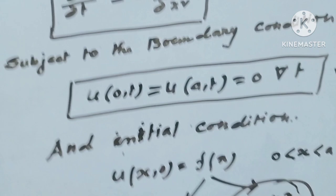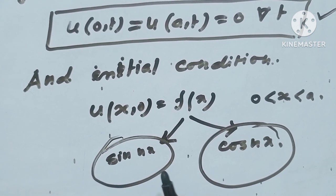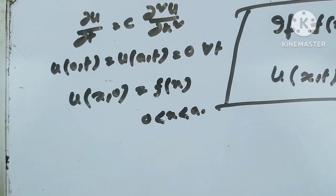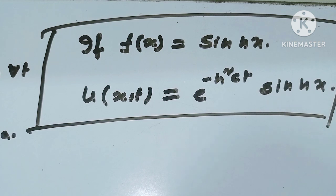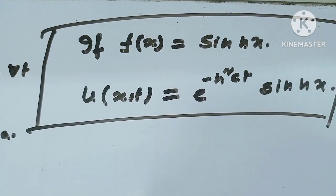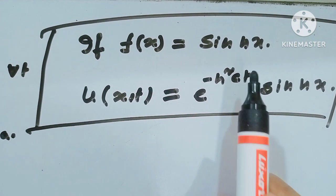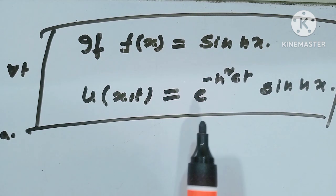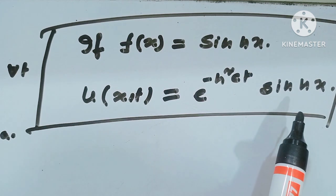Now I will show how to solve this shortly. First solution: when u(x,0) = sin(nx), that is when f(x) = sin(nx), then the main equation of the heat equation gives u(x,t) = e^(−n²ct) * sin(nx). When f(x) = sin(nx), then u(x,t) equals e to the power minus n squared c t, times sin(nx).